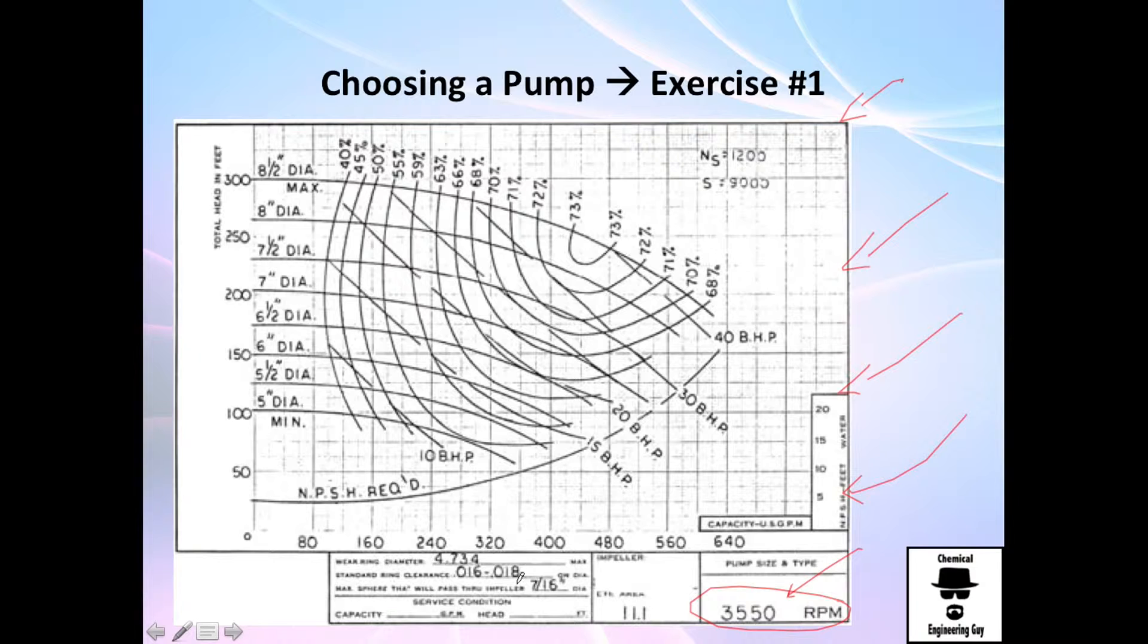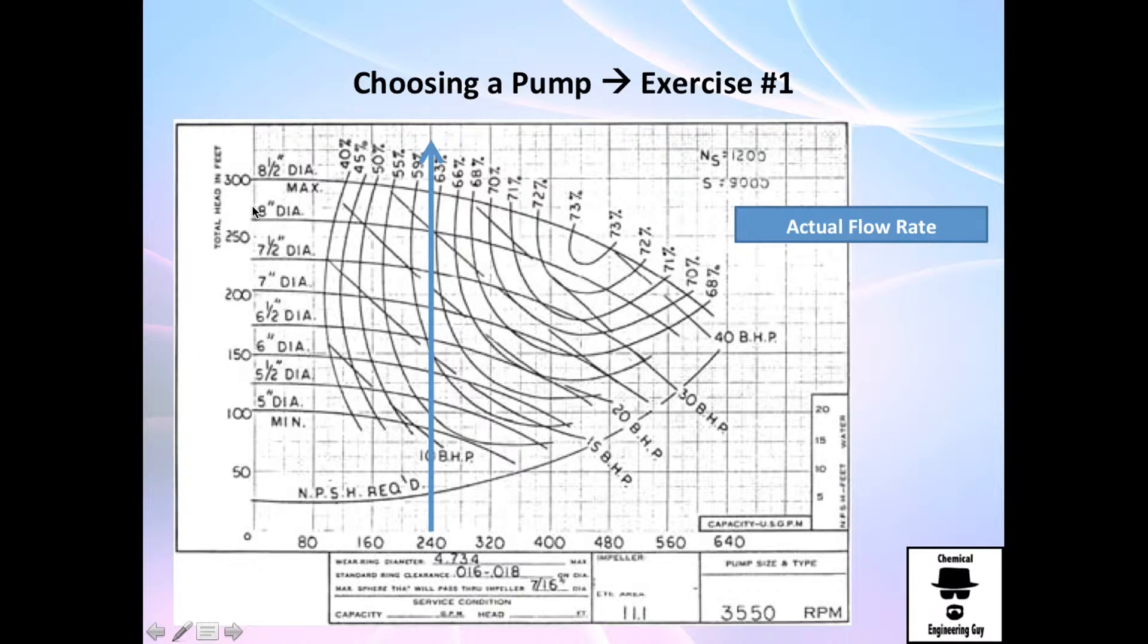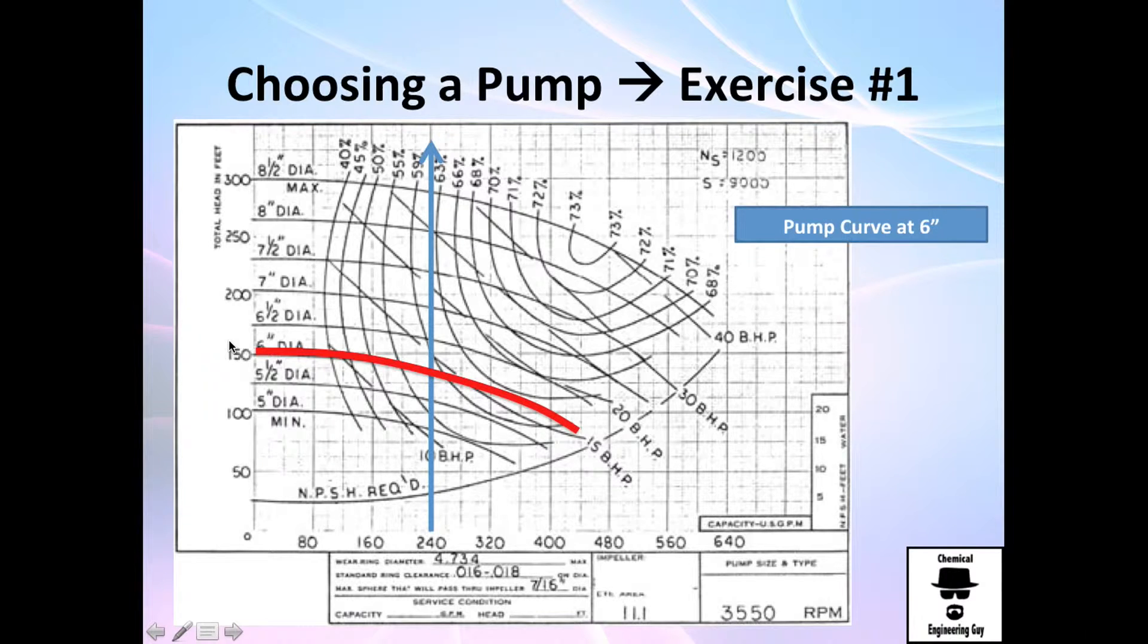Right now we have the actual flow rate, which is this one right here. We know we're operating a six-inch diameter, and the point of operation—you don't need to know the system curve because we already know it is right here. This is the actual point of operation.